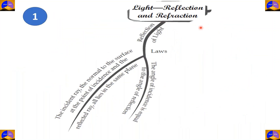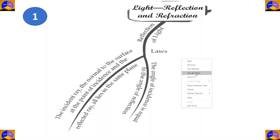Light is an electromagnetic energy, and when it bounces off something it is called reflection. In the reflection of light there are two laws that are very important. The first law says that the incident ray, the normal to the surface at the point of incidence, and the reflected ray all lie in the same plane.